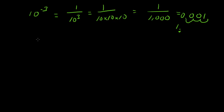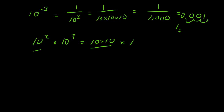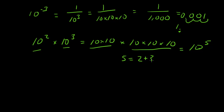Let's talk about multiplying exponents. Let's say we've got 10 squared times 10 cubed. That's 10 times 10, times 10 times 10 times 10, which is 10 to the 5th. You'll notice that 5 is 2 plus 3. So when we multiply powers of 10, all we have to do is add their exponents. For example, 10 to the 23 times 10 to the 4th equals 10 to the 27th.